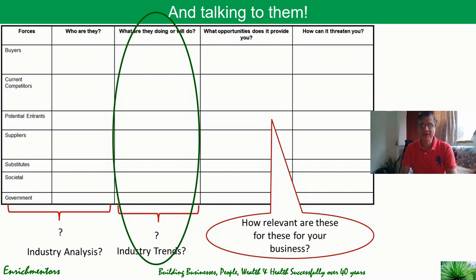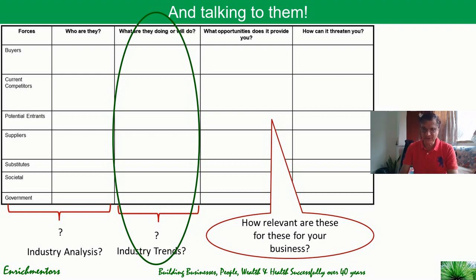The same approach applies to major players in the digital marketing industry — understand who they are, what they are doing, and what they will be doing. Same for suppliers, substitutes like the traditional marketing industry, and society and government. Meet a cross-section of each of these forces, interview them in person or online, and figure out who they are, what they are doing now, and which direction they want to move. These will give you insights into trends from a primary research perspective.